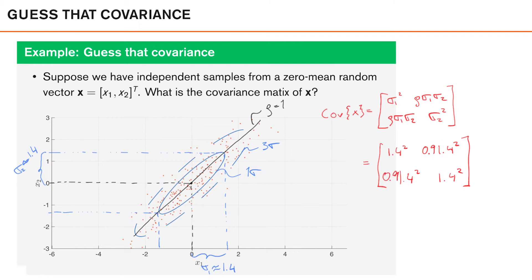Putting this together, we get a final guess for our covariance matrix: the variance in each dimension is around 2 and we have a cross covariance of 1.8. The covariance matrix tells us both the variance in the different dimensions and how correlated the different dimensions are. This information is used extensively in sensor fusion and nonlinear filtering, which we will see later in this course.